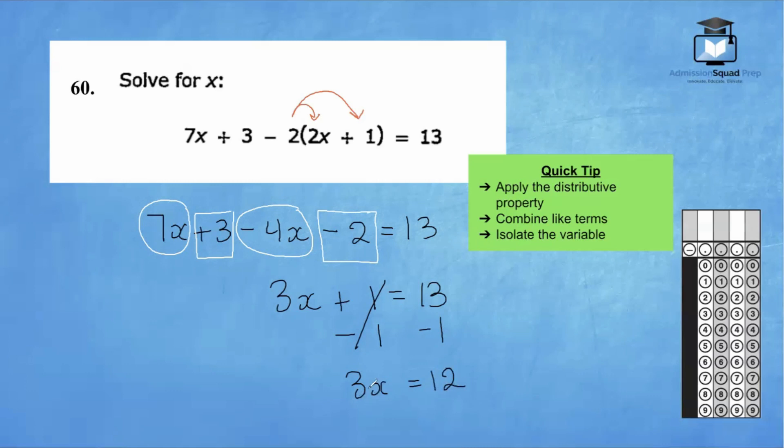Our final step is to undo this multiplication bond. If x is being multiplied by 3, the opposite or inverse of that is to divide by 3. So we will divide both sides of this equation by 3. Our final answer here is 4. Because this is a positive number, we're going to get started right here by writing 4 in the white box and we'll bubble in the number 4 right here. Let's try out number 61.